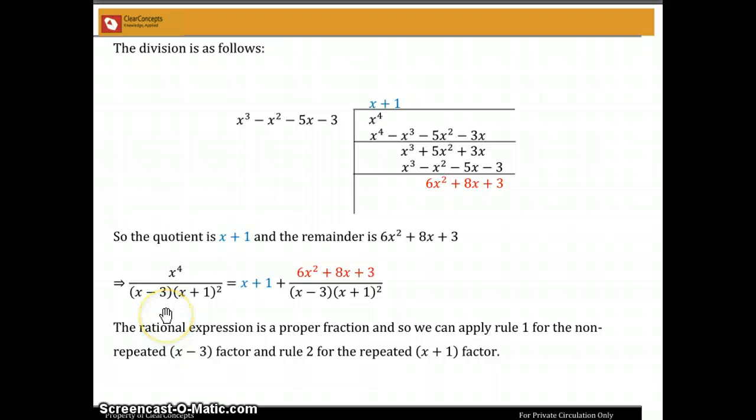And so now we can express x power 4 divided by (x minus 3)(x plus 1) squared as x plus 1 plus the proper fraction: 6x squared plus 8x plus 3 divided by (x minus 3)(x plus 1) squared.